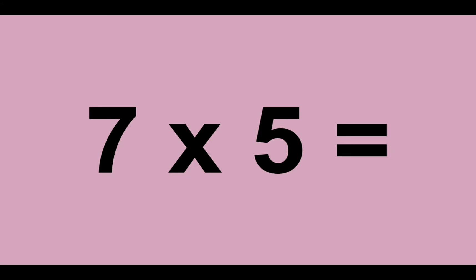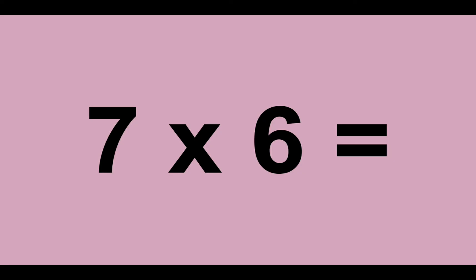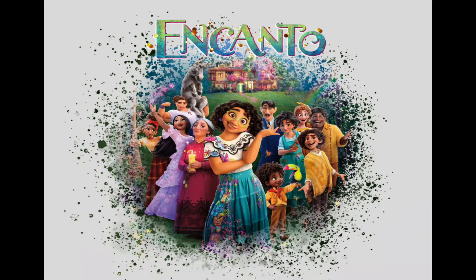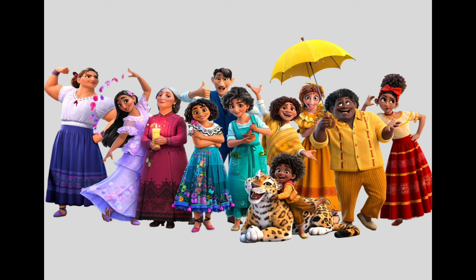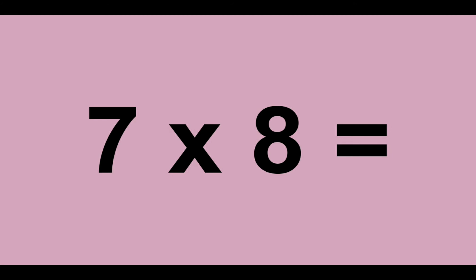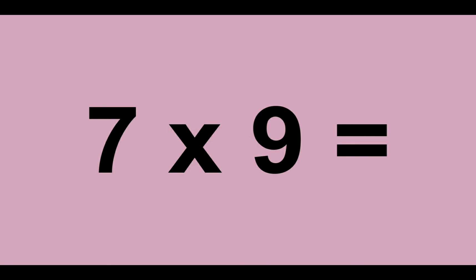7 times 5 equals 35. 7 times 6 equals 42. 7 times 7 equals 49. 7 times 8 equals 56. 7 times 9 equals 63.